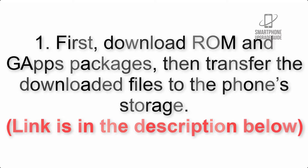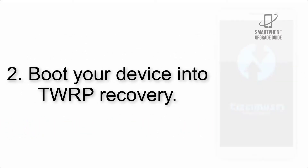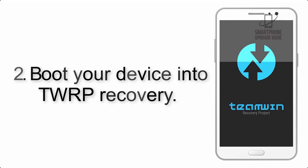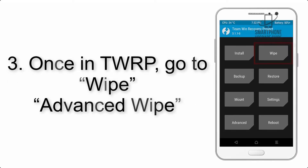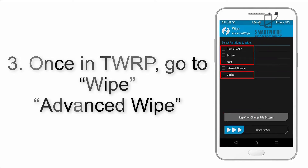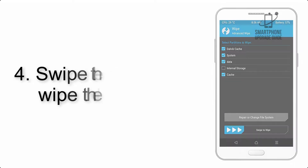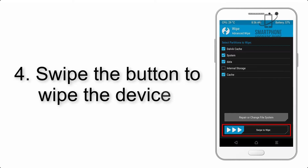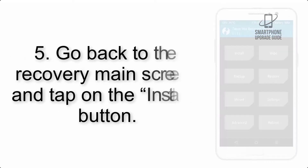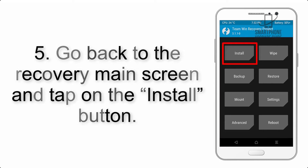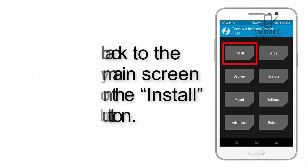Step 3: Boot your device into TWRP recovery. Once in TWRP, click on Advanced Wipe and select the checkboxes as shown in the image, excluding internal storage. Step 4: Swipe the button to wipe the device. Step 5: Go back to the recovery main screen and tap on the Install button.